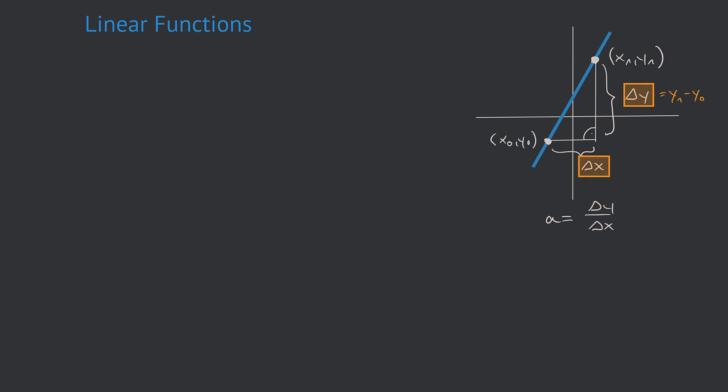Similarly, delta x is nothing else than the difference in the x coordinates of the two known points, which is nothing else than x1 minus x0. Plugging in these values in the slope equation, we get a formula calculating the slope of the line from the coordinates of the two given points.